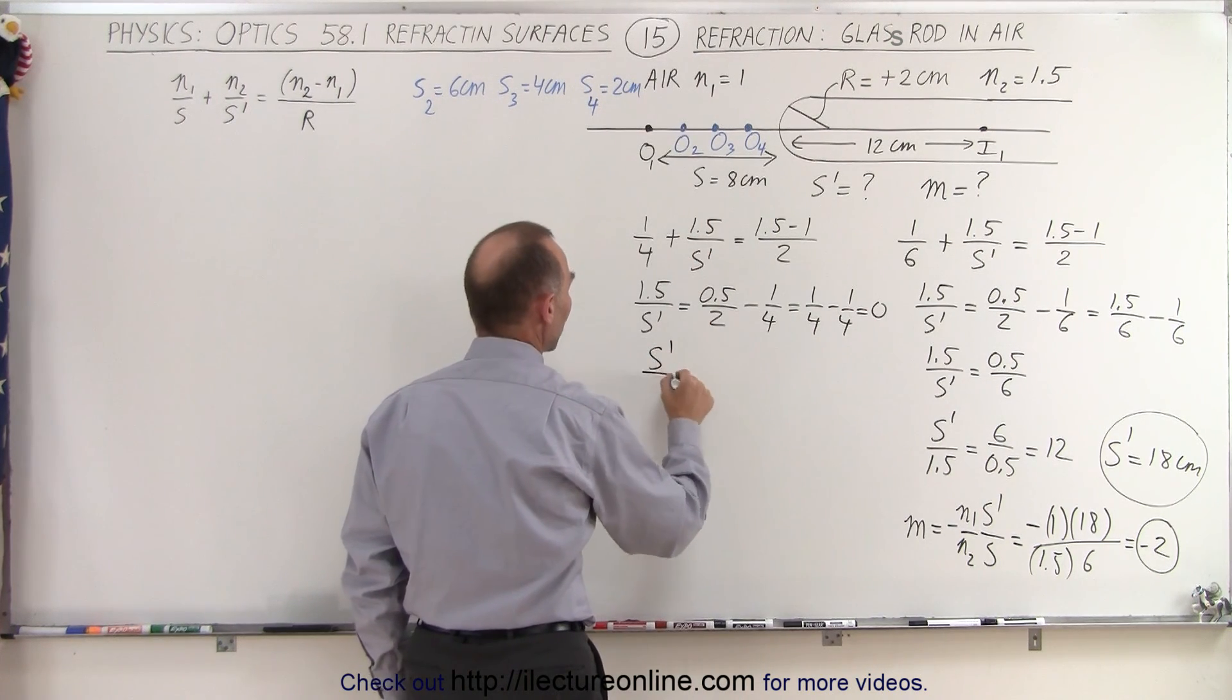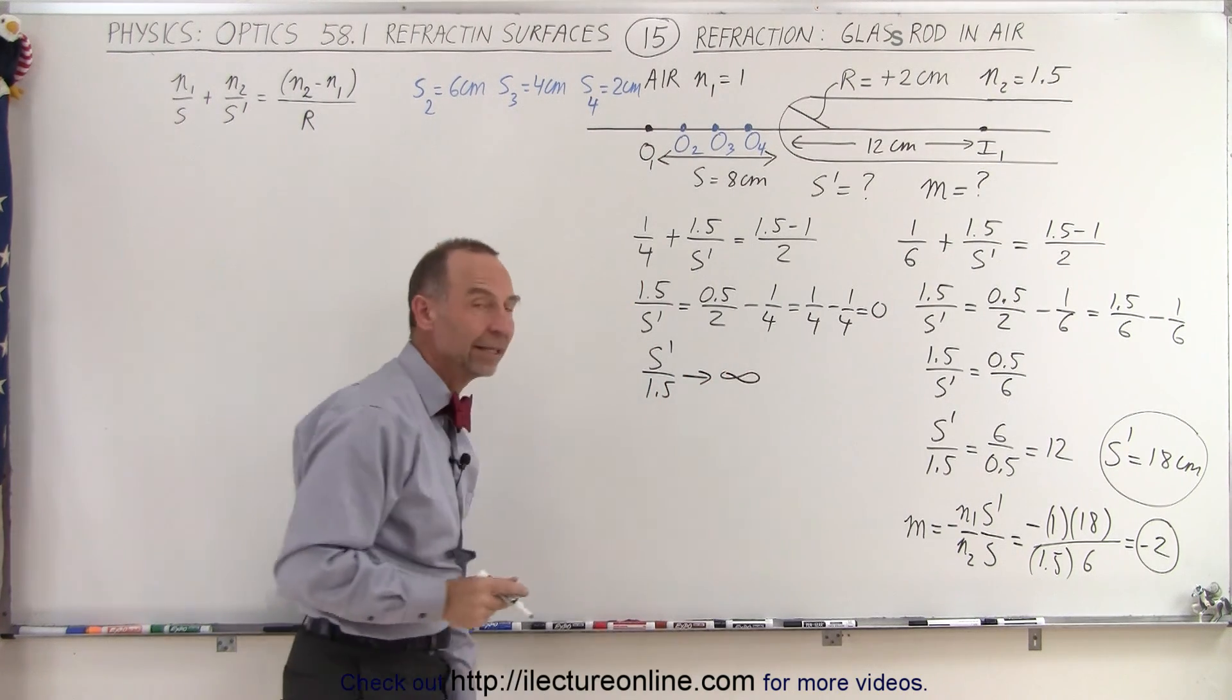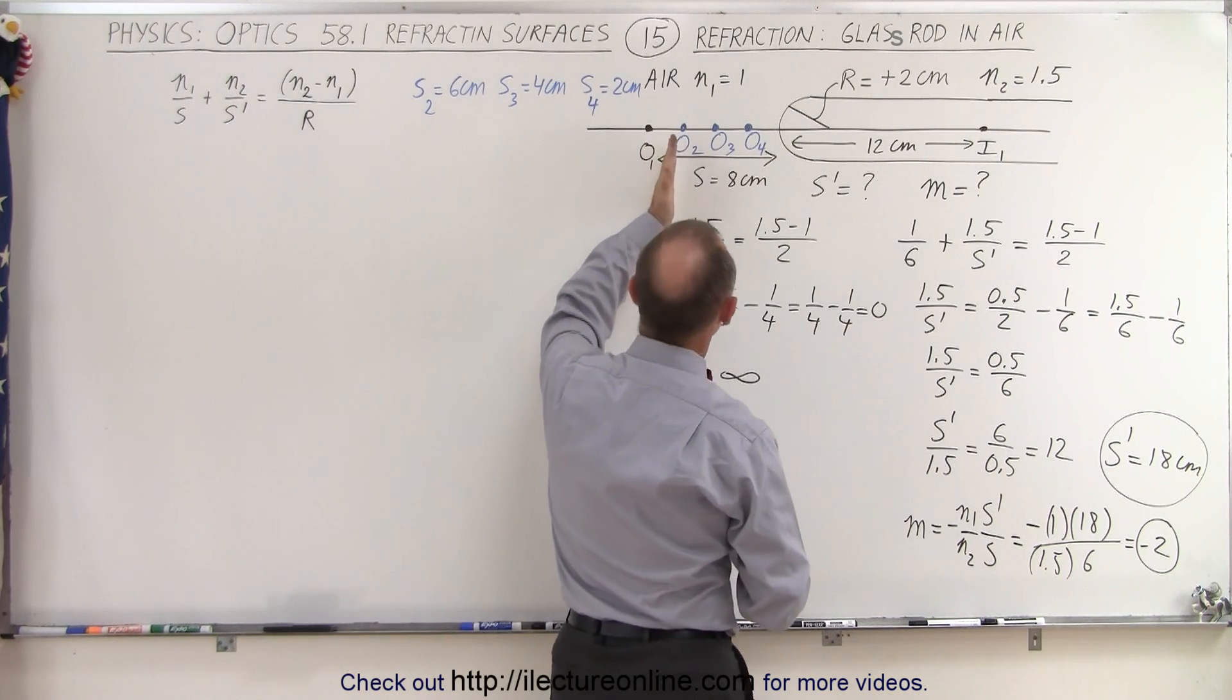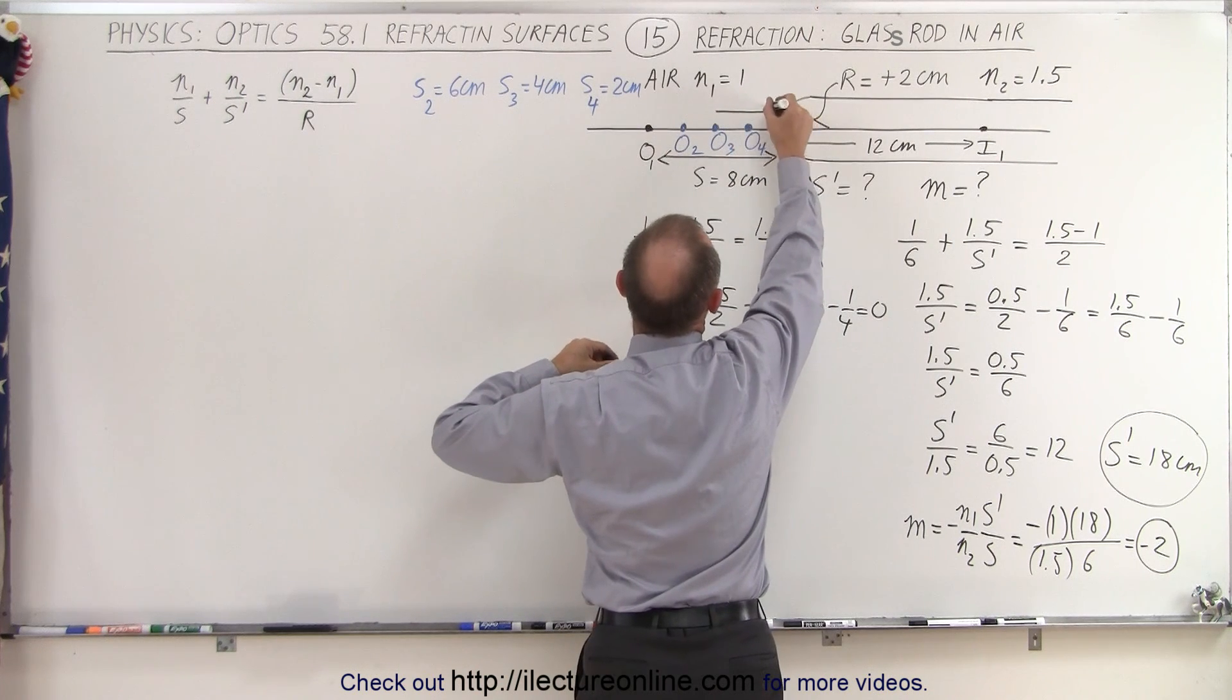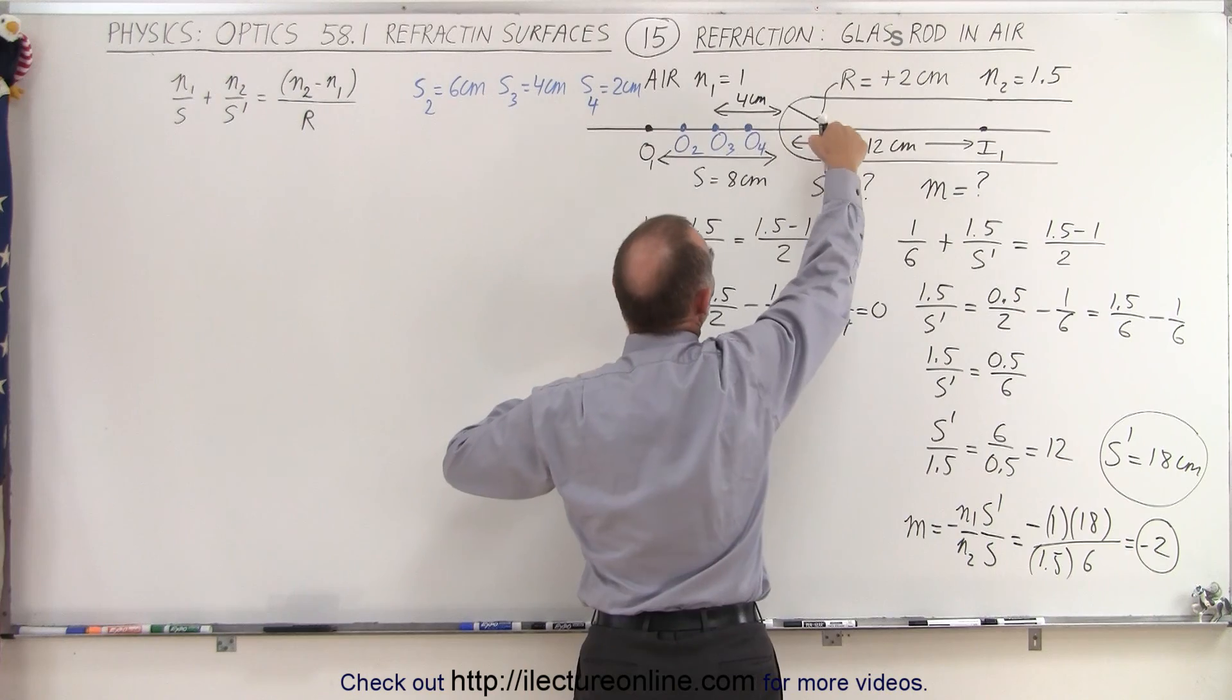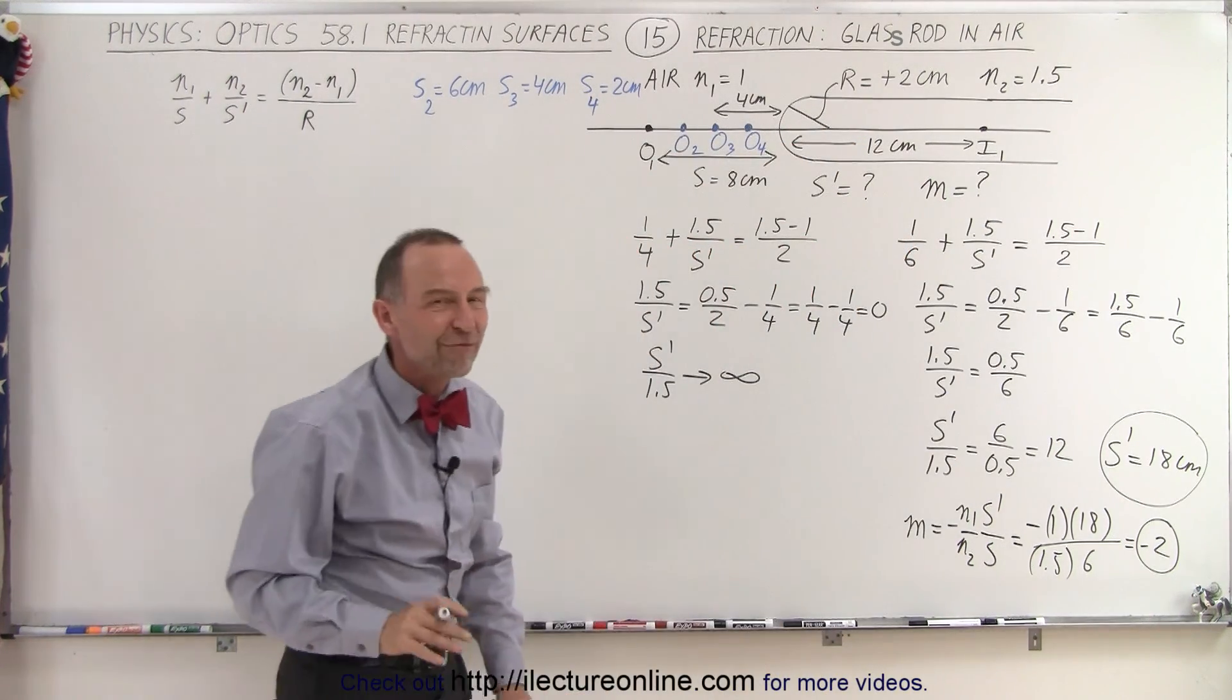Common denominator is 4. So this becomes 1 over 4 minus 1 over 4, which is equal to 0, which means that s prime over 1.5 must therefore equal infinity. Wow. So what that means is, as we put the object closer and closer to the boundary, eventually when we reach a point where the object is 4 centimeters away from the boundary, notice that 4 centimeters is exactly twice the radius of curvature, it moves the image all the way out to infinity.